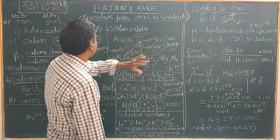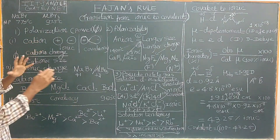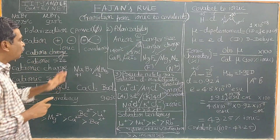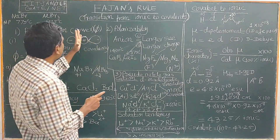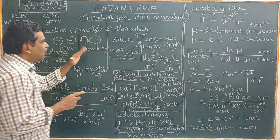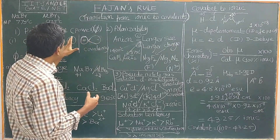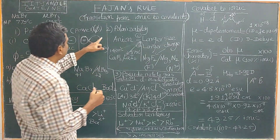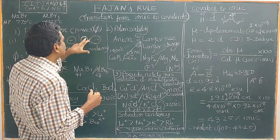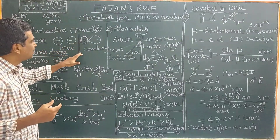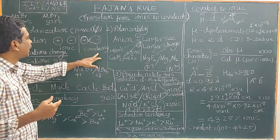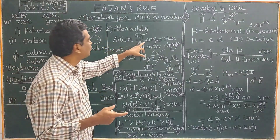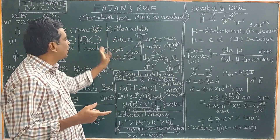Now let us look at polarizability. In an ionic compound, ions have a spherical, symmetrical electron cloud. When the cation has high polarizing power and approaches the anion, the symmetrical electron cloud of the anion becomes distorted. This distortion creates a tendency for covalent character. For anions, larger size means greater polarizability, and therefore increased covalent character.